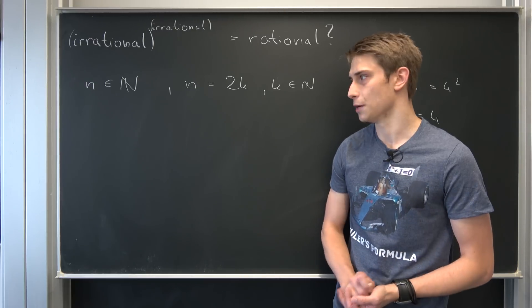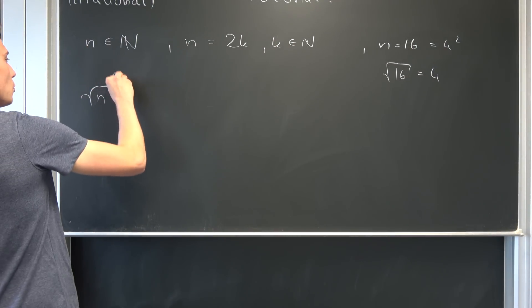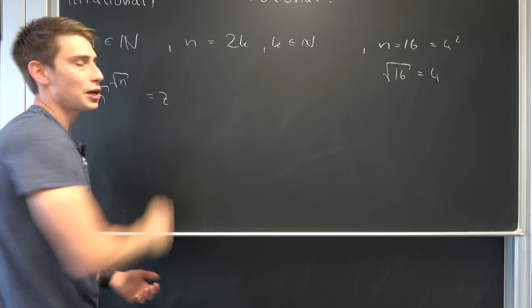We're going to take it for granted today. Maybe I'm going to prove it in the near future. So that also means we now take square root of n to the power of square root of n. We're going to call this little number z right here.